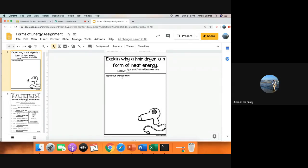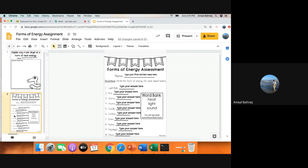So first thing you're going to do is you're going to type your name and you're going to type your answer. It could just be one sentence, something that tells me how do you know that a hair dryer is heat energy and not light or sound. The second thing that you're going to do, it says Forms of Energy Assessment right here. It says write the form of energy for each object below.